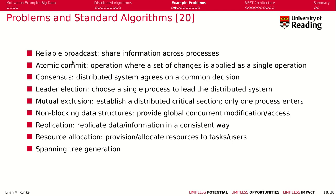A second problem is atomic commit. You want to make a set of changes, but you want to make sure that this set of changes looks like one operation. For example, I want to reduce your bank account by five pounds and give five pounds to your friend — a money transfer. What you don't want is for your bank account to get reduced and then the system crashes and the five pounds vanish. Atomic commit ensures you can bundle operations together, like transactions, so either all happened or none.